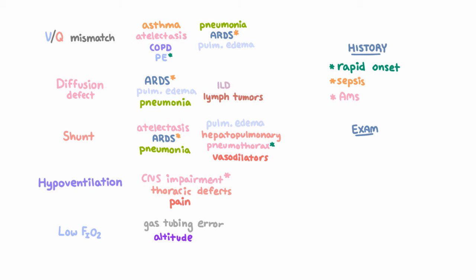And likewise, on exam, you can collect a number of important clues, like altered mental status, which you can see with aspiration or opioid overdose.